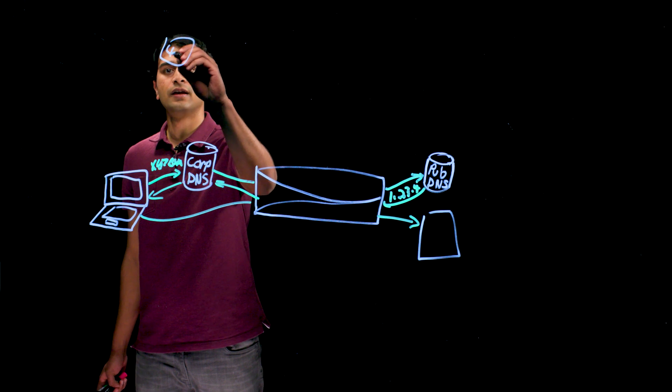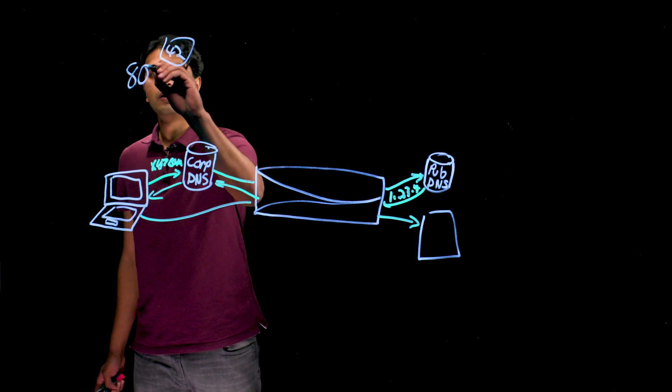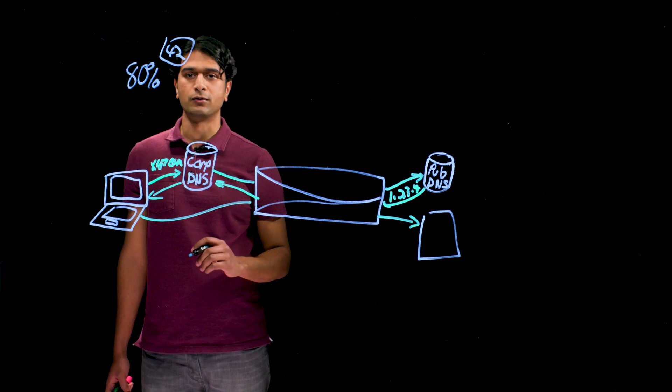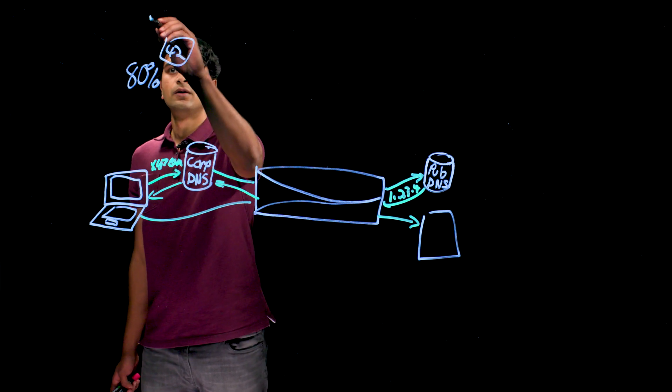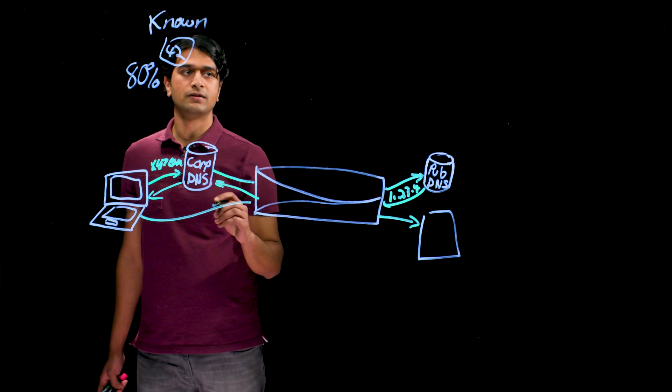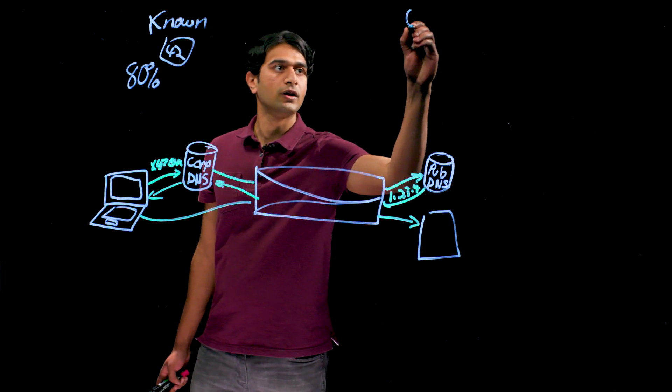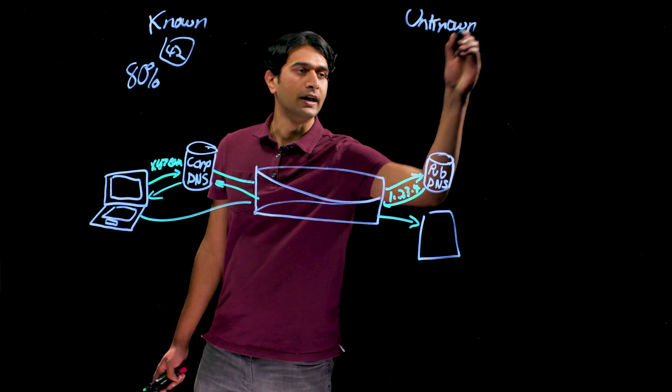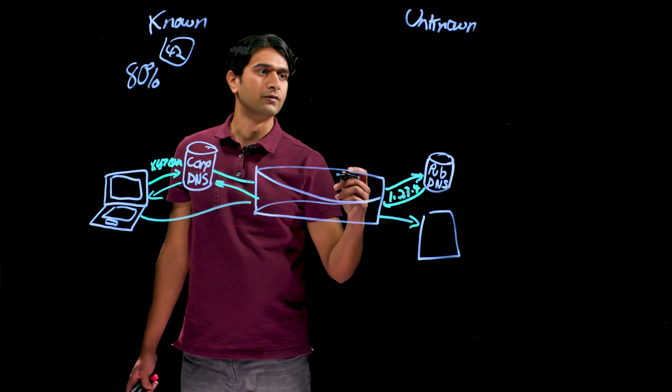There are a couple different types of DNS threats. There's both the known and the unknown. Our unit 42 researchers tell us that 80% of malware that they see uses DNS to establish a command and control channel. For the known we can use a wealth of data, but for the unknown there's a couple evasive techniques that attackers will use that require a more predictive approach.